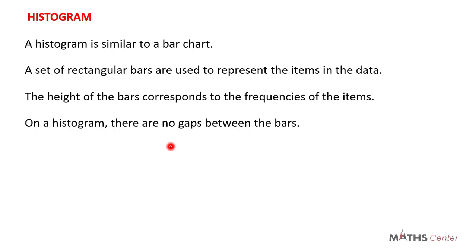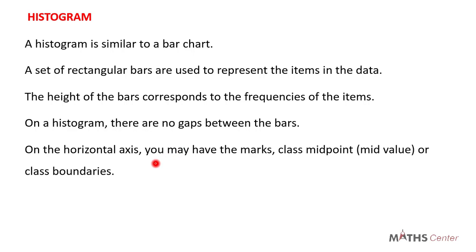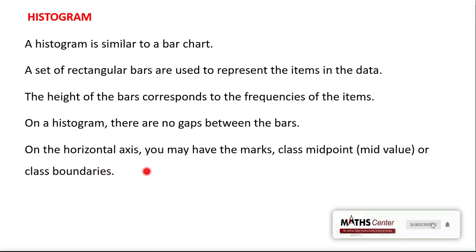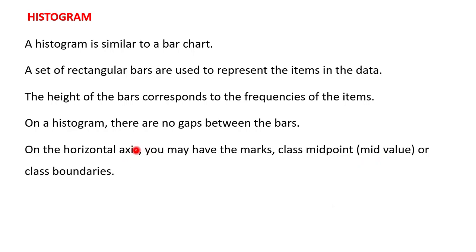On a bar chart, the frequencies are usually shown on the vertical axis and the marks on the horizontal axis. On a histogram, the horizontal axis may have the marks, the class midpoint — which is also known as the class midvalue — or the class boundaries. What appears on the horizontal axis depends on the type of data given.